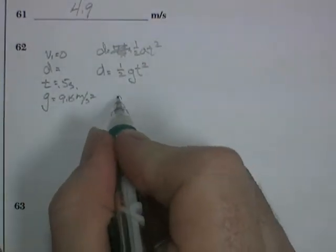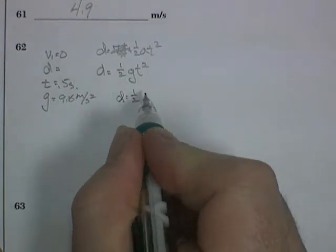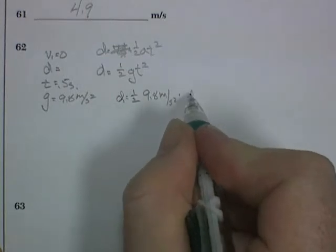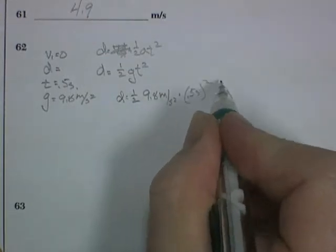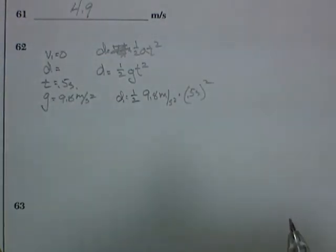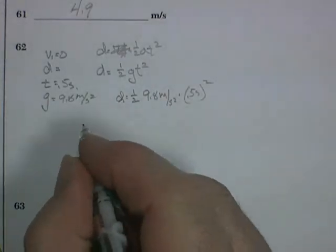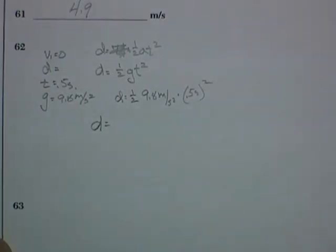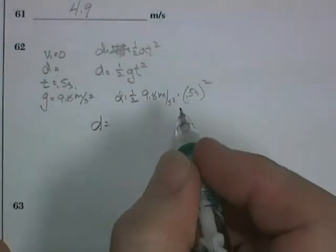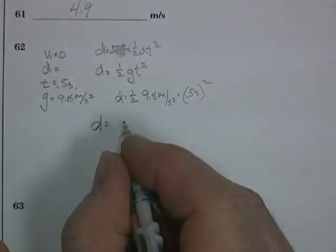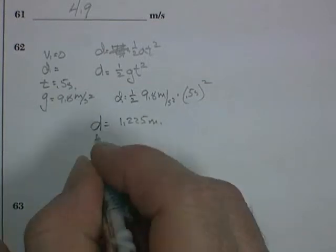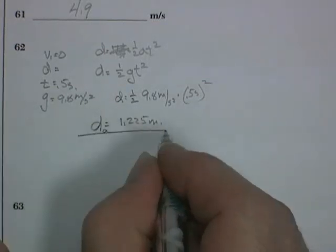So the distance is equal to one half of 9.8 meters per second squared times 0.5 seconds squared. And so the distance at point A is going to equal that. When I plug in, I come up with a distance of 1.225 meters. And that's the distance at point A.